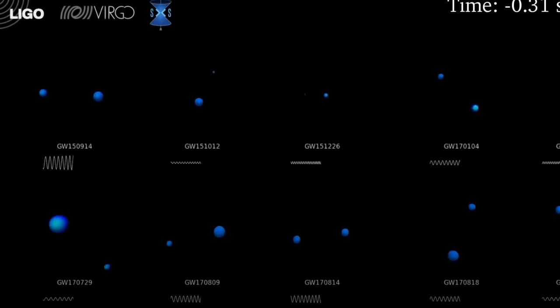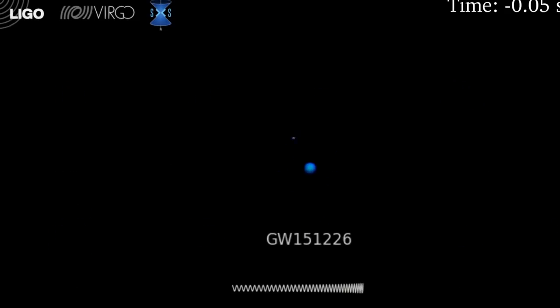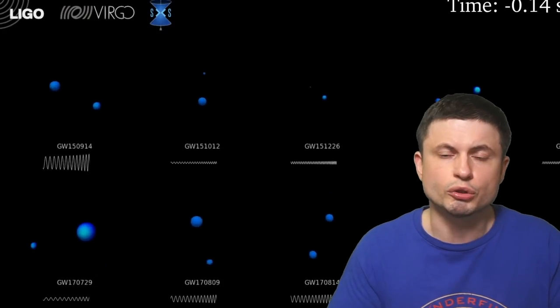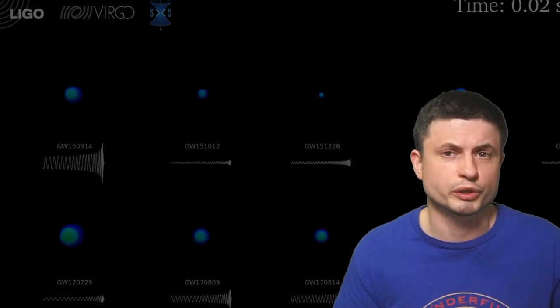And that's of course why to date all of the detections coming from LIGO have been of relatively small, in terms of mass, black holes, various types of neutron stars, black hole neutron stars, but nothing above a certain mass or below a certain mass, because this is essentially the only frequencies we can currently detect.